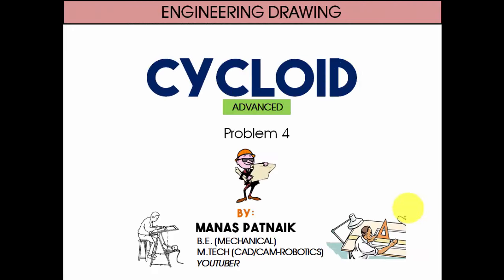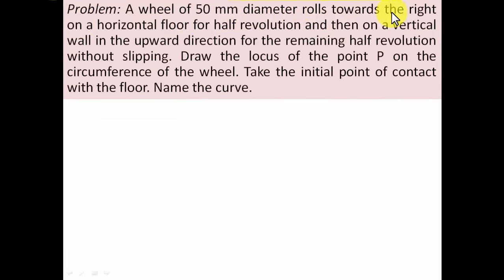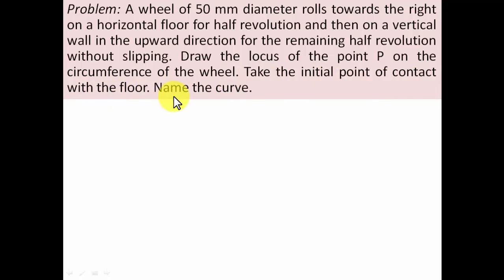Hi there guys, this is your friend and tutor Manas and today we will be continuing with our discussion on cycloidal curves. The problem I've picked up is a slightly advanced form of a cycloid having different kinds of conditions and stipulations incorporated. A wheel of 50mm diameter rolls towards the right on a horizontal floor for half revolution and then on a vertical wall in the upper direction for the remaining half revolution without slipping. Draw the locus of the point P on the circumference of the wheel — take the initial point of contact with the floor and name the curve.